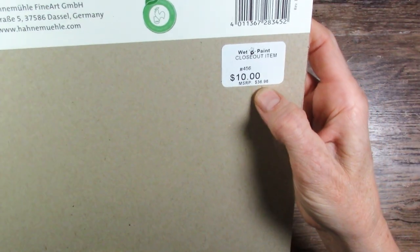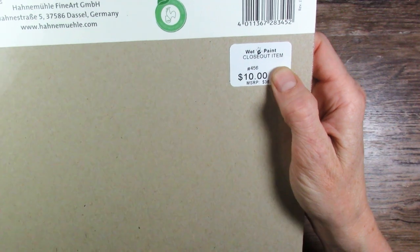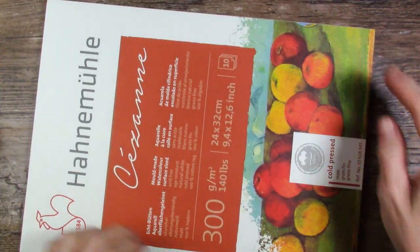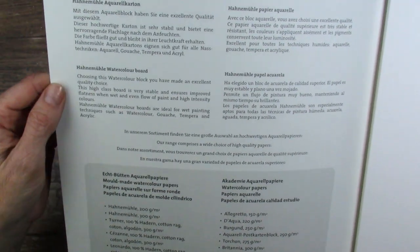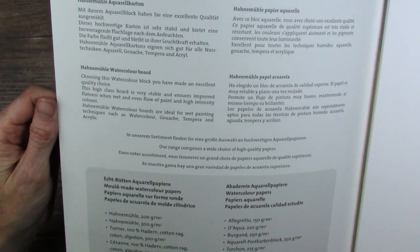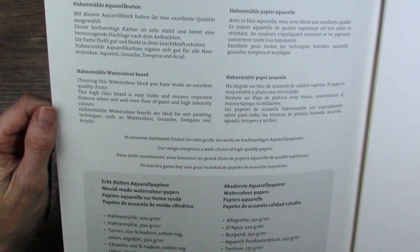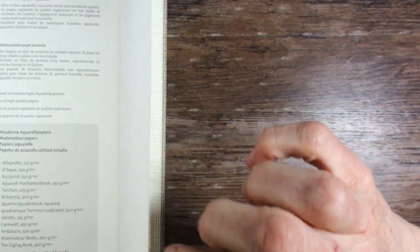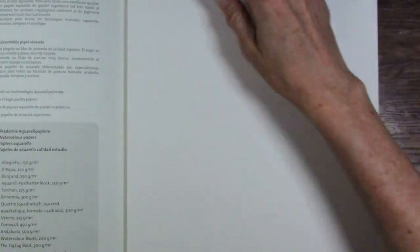Okay so I guess it's a ten dollar item. Wow it's a closeout item so that's probably why it's coming free with some of the orders. The MSRP though was originally $37. What does $37 paper look like? It is a block. Hahnemühle watercolor board. Choosing this watercolor block you have made an excellent quality choice. The high class board is very stable and ensures improved flatness when wet and even flow of paint and high intensity colors.